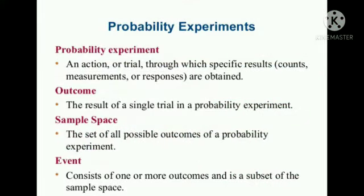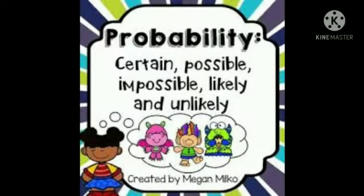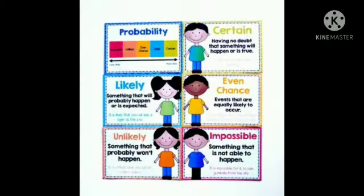An outcome is the result of an action. An event is a collection of outcomes of a chance experiment. We should also bear in mind the sample space — this is a collection of all possible outcomes for the experiment.